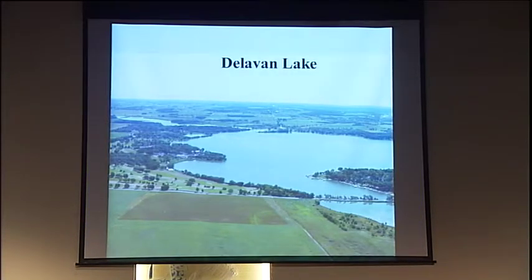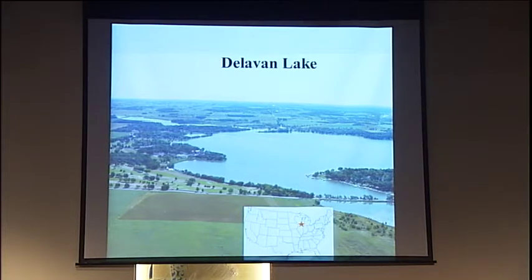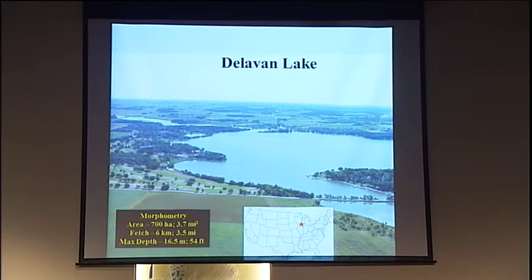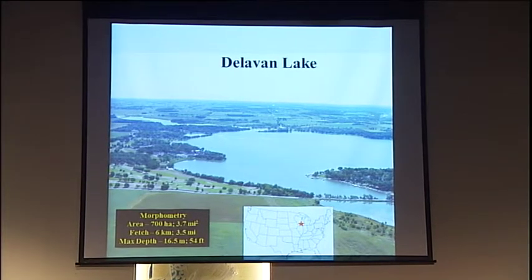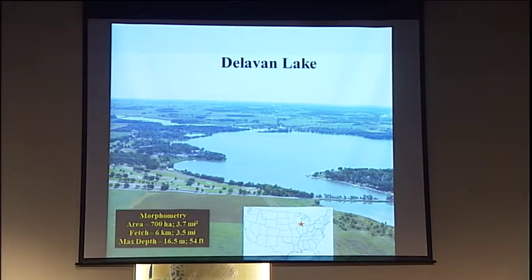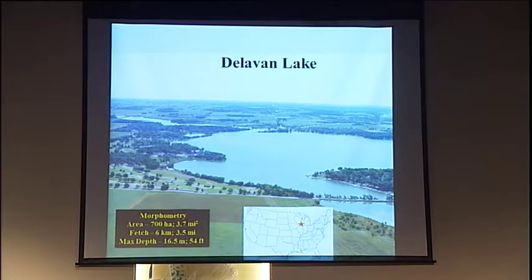The lake I'm going to talk about today is Delavan Lake, found in the northern part of the United States. It's a fairly moderate sized lake — it has a fetch of about six kilometers, an area of about seven square kilometers, and a mean depth of about 16 and a half meters. So it's fairly typical of lakes in this area.